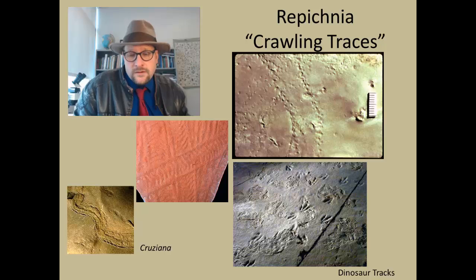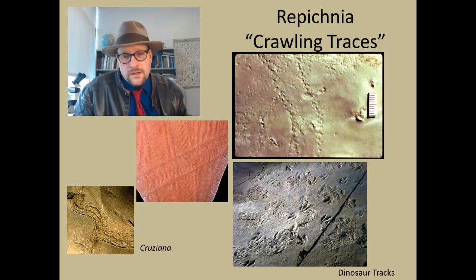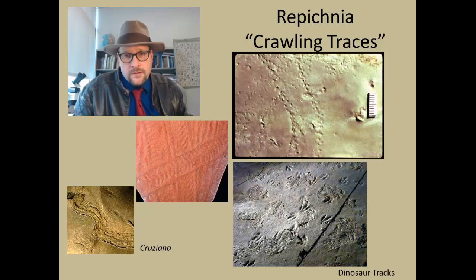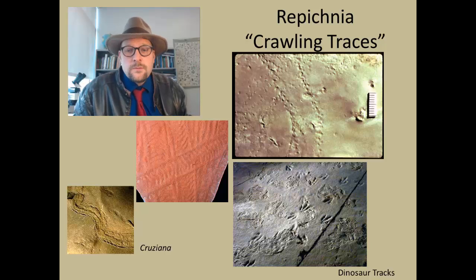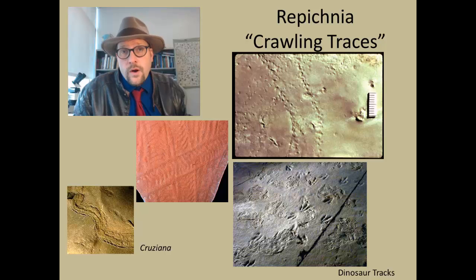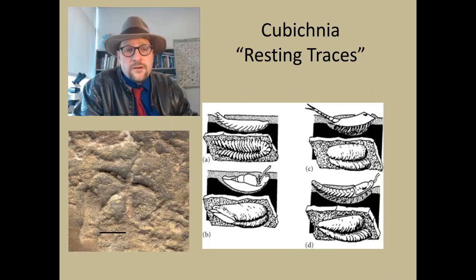Repichnia could also include dinosaur trackways and crawling traces left by insects moving across a substrate — these are very common. Any trace left by the movement of an organism across the substrate would be classified as repichnia. Lots and lots of animals leave behind tracks and traces — these are the footprints of organisms; even humans leave behind tracks in sediment that can be preserved in the rock record.